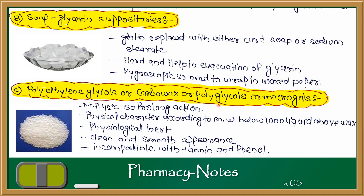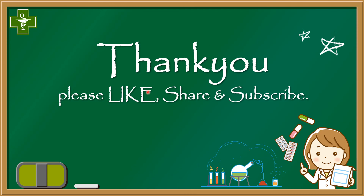Polyethylene glycols, carbowaxes, polyglycols, and macrogels are all synthetic systems. Their melting point is 42 degrees centigrade, so they provide prolonged action as the high melting point means slow release at body temperature. Physical character: according to molecular weight, below 1000 they are liquid and above 1000 they become waxy solids — for example PEG 400 is liquid and PEG 4000 is a solid wax. They are physiologically inert with no pharmacological action, clean and smooth in appearance. However, they are incompatible with tannins and phenols.